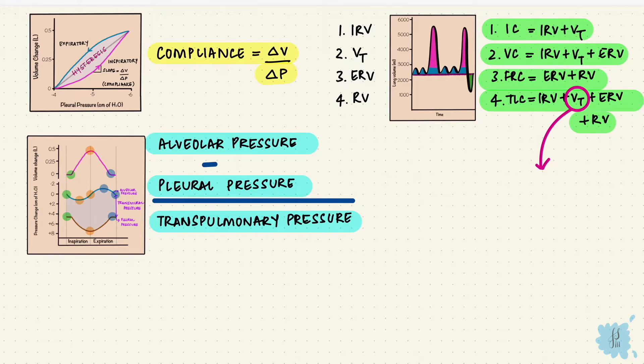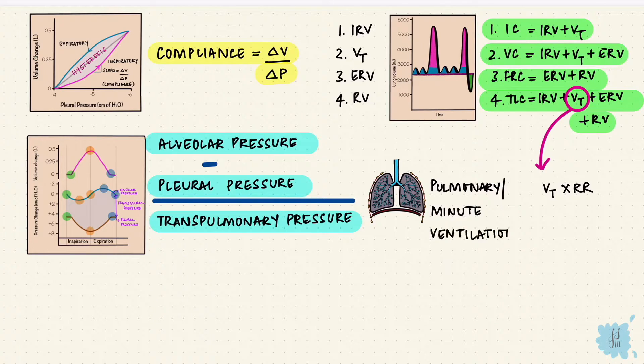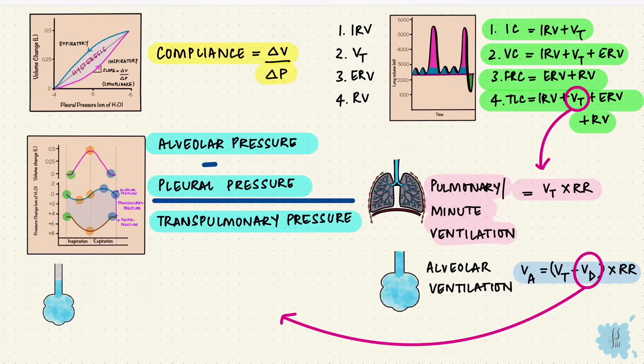Let's pick up the tidal volume now. The tidal volume multiplied by the respiratory rate gives us the pulmonary or the minute ventilation rate. From this, if we remove the dead space, then we get the alveolar ventilation rate. So it's the difference between the tidal volume and the dead space volume into the rate of respiration. The physiological dead space is the tidal volume multiplied by the difference between arterial and expired carbon dioxide over arterial carbon dioxide.